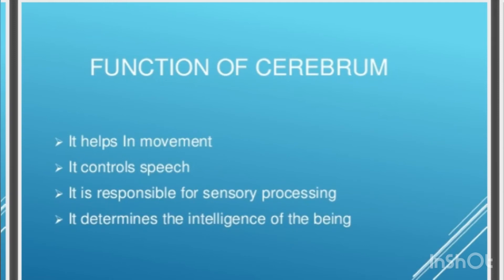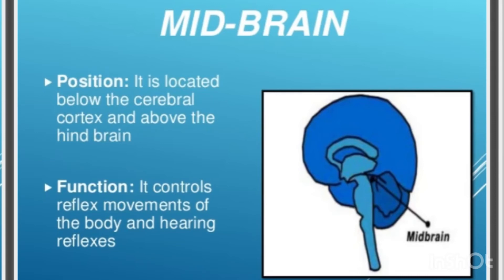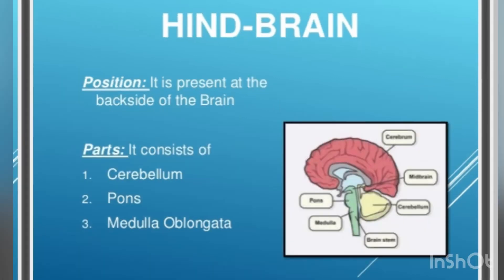It determines the intelligence of the being. Midbrain position: it is located below the cerebral cortex and above the hindbrain. Function: it controls the reflex movement of the body.